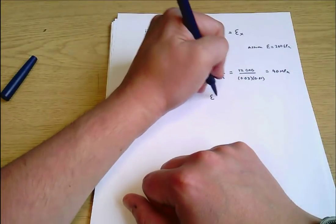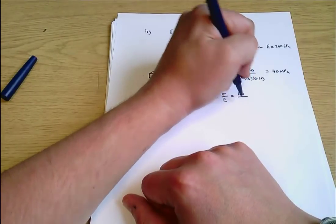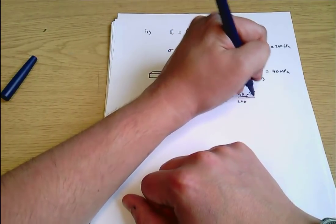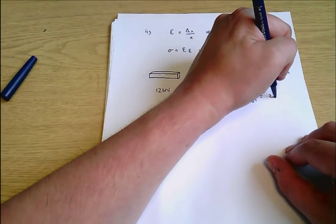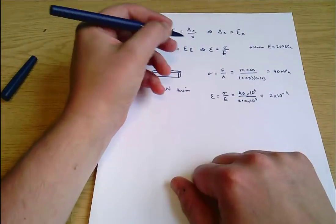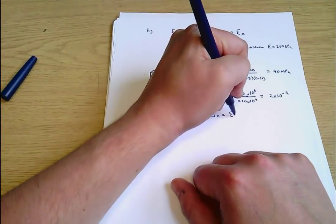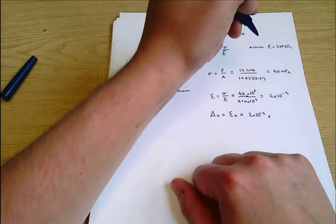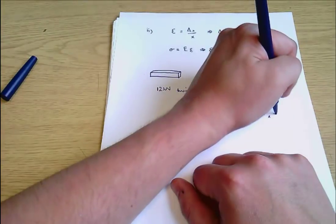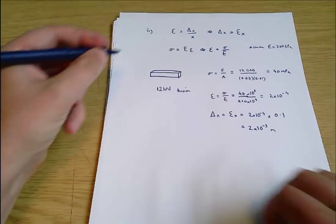For section 1, stress equals 12,000 divided by 0.03 times 0.01, giving 40 megapascals. Epsilon equals sigma over E equals 40 times 10⁶ over 200 times 10⁹, which equals 2 times 10⁻⁴. Then delta-x equals epsilon times the original length, which is 100 millimetres or 0.1 metres, giving 2 times 10⁻⁵ metres.